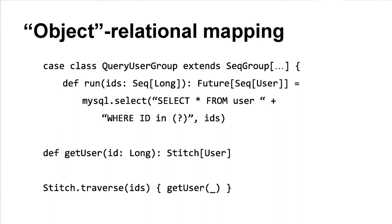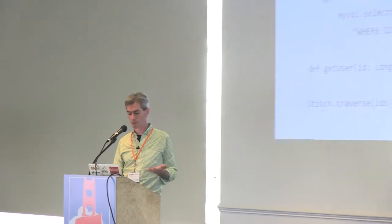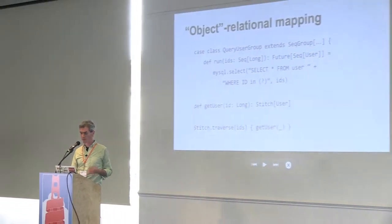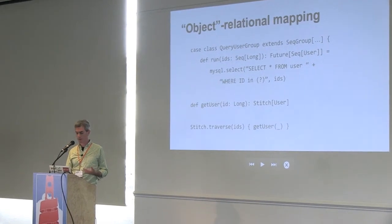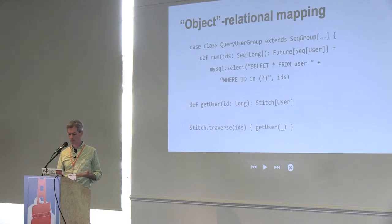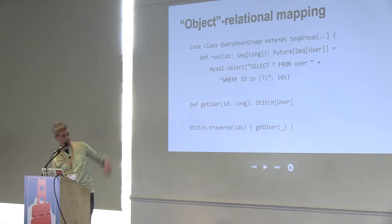This is a non-RPC example of how you might use Stitch, and we do have an application at Twitter using it this way. You want to compose SQL queries. If you do lots of individual single-key SQL queries, your performance is terrible. But if you do a batch query at the SQL level, you get decent performance. Here's a way to do that without exposing the batching to the application layer — you can make lots of single-key calls at the application layer, but have that converted into a batch SELECT call.